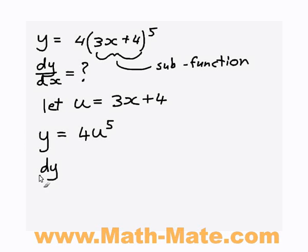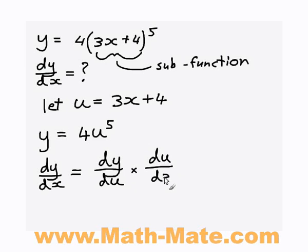The chain rule says that to work out dy/dx, what you can do is work out dy/du, which is our new variable, and multiply this by du/dx. That will give you your answer. If you treat these just like fractions, which you can sort of do, you can see that you can cancel out the du's and you just get back to your dy/dx, which is what you're trying to find out.